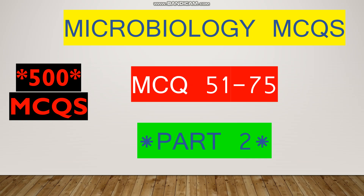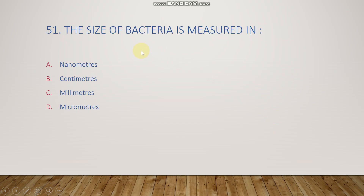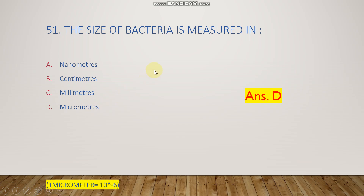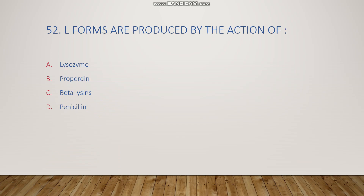The first question is: the size of bacteria is measured in nanometers, centimeters, millimeters, or micrometers? The right answer is option D, that is micrometers. One micrometer is equal to 10 to the power minus 6 meters.